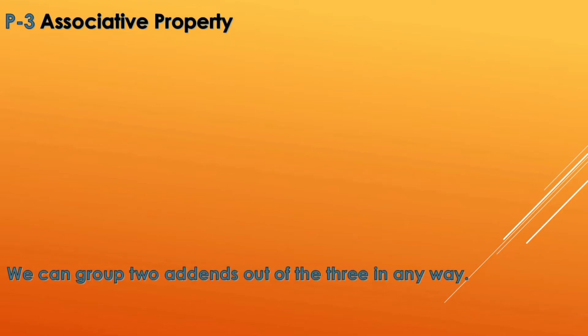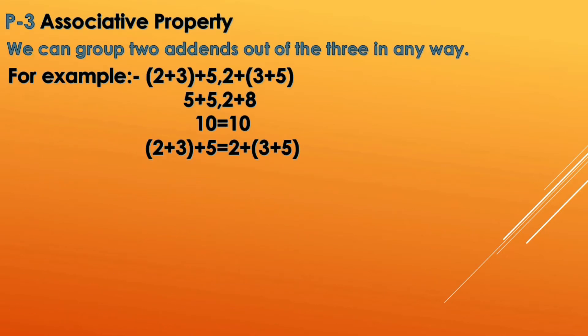Moving to the next property — property number 3 — that is associative property, which we also call grouping property. If we change the grouping, the answer does not change. We need three whole numbers for this. You can see that 2, 3, and 5 are the three whole numbers. First grouping 2 plus 3 gives 5 plus 5 equals 10. In the second way, grouping 3 plus 5 gives 2 plus 8 equals 10. So we can group any two of the three addends.